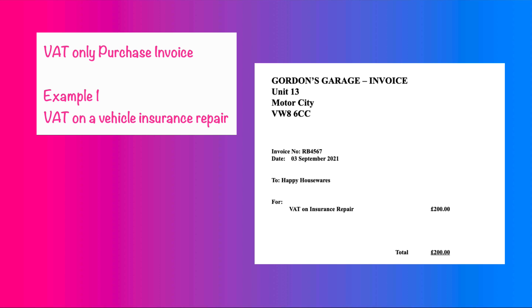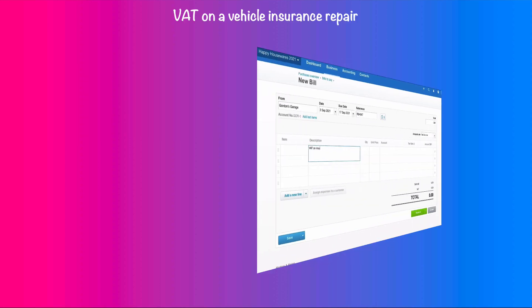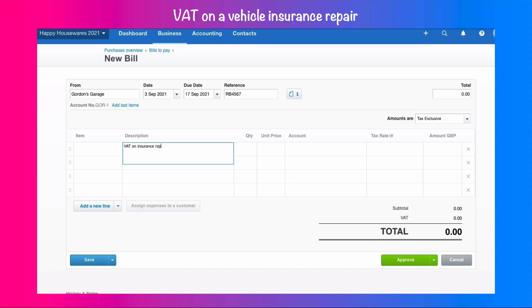Let's look at two examples of VAT only purchase invoices. Here's the first purchase invoice. It's from a garage and we've had an insurance repair. When that happens you can get a bill from the garage saying that you need to reclaim the VAT amount. So this bill is VAT only — it's VAT on an insurance repair and it's £200. I've entered my description: VAT on insurance repair.